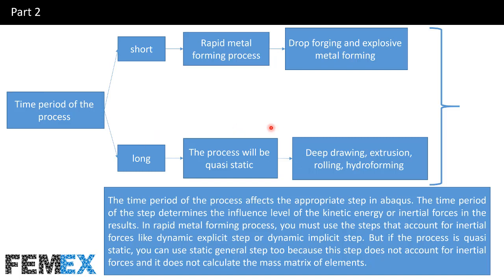For modeling quasi-static processes, you can use the dynamic explicit step, dynamic implicit step, or static general step. But for rapid processes, you can only use the dynamic explicit or dynamic implicit step, because the static general step does not account for the mass matrix of elements and the results obtained using it for rapid metal forming are completely wrong.